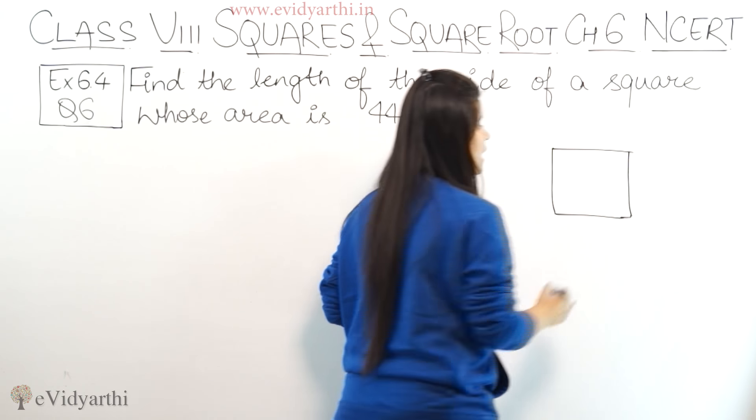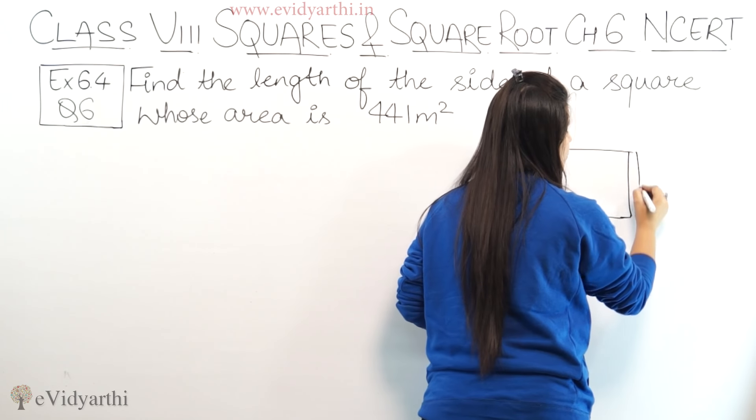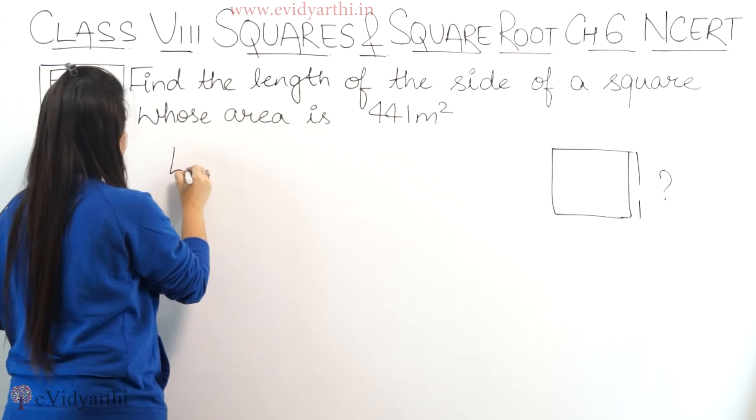So let's suppose, this is our square. So its side length we have to find out, how much it is. Right?